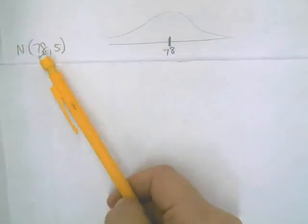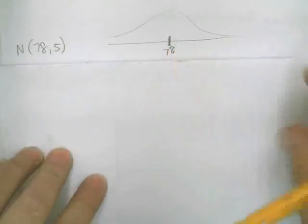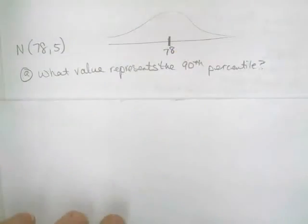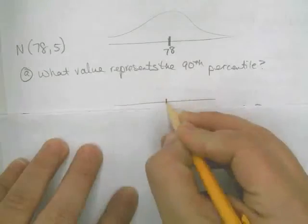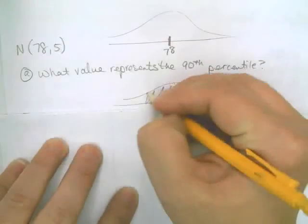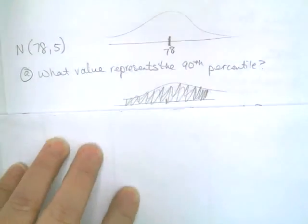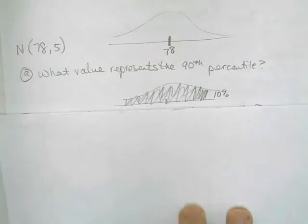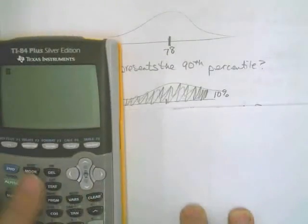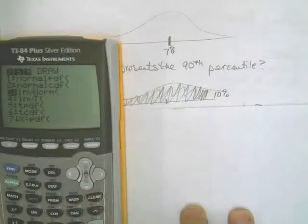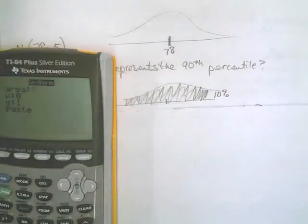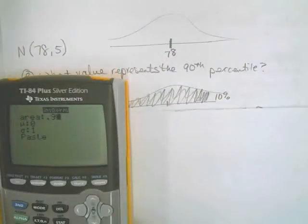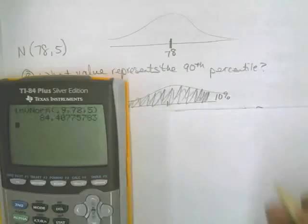The first question asks: what value represents the 90th percentile? The 90th percentile means everything 90% and below is shaded, with 10% remaining on the right. This time we go to second distribution but choose number 3, Inverse Norm. The area under the curve is 0.90, mean is 78, standard deviation is 5. The cutoff point for the 90th percentile is 84.4.